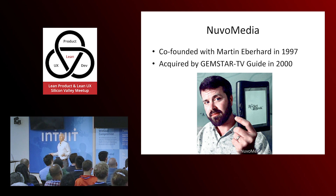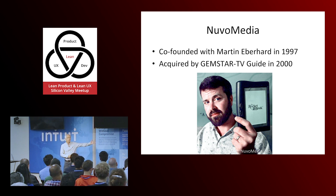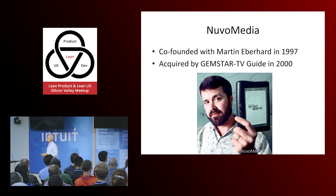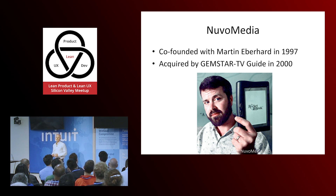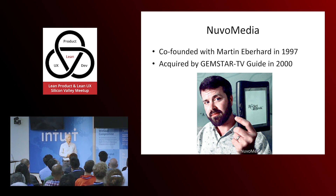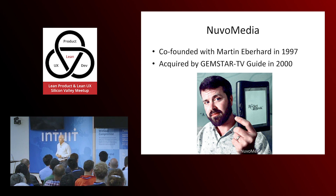It sounds ridiculous now, but it was really hard in the 90s to make ebooks. The most common refrain when we were raising money was, 'No one is ever going to read on a screen, so this is never going to work.' But we worked on it and eventually built a product that worked really well. We did a bunch of iteration at the time because we could — it was a small, relatively small product.